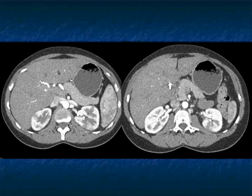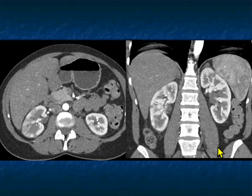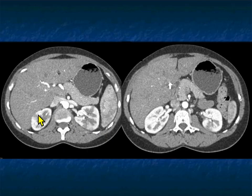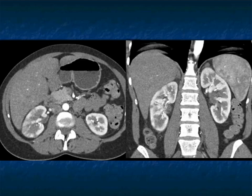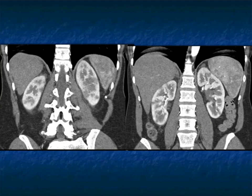Here you quickly look at the corticomedullary interface bilaterally, and then you start looking at multiple areas in both kidneys where there's decreased attenuation, very nicely shown. Multiple patchy areas, striated nephrograms — you see in the cortex these striations, very impressive on the right. It's on the left as well, but less impressive. That's a very, very good finding for infection.